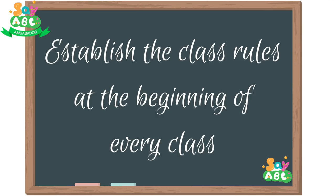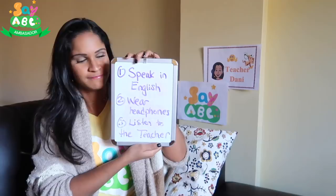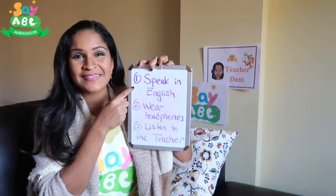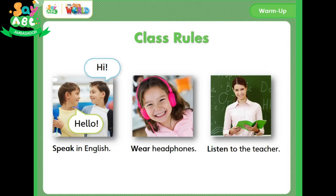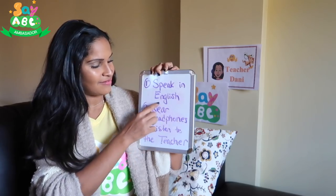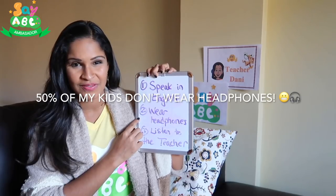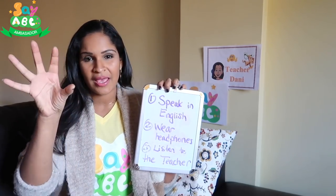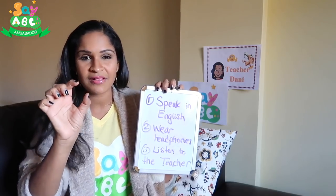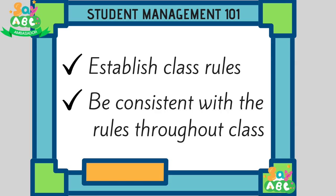At the beginning of every Say ABC class you have the class rules: rule number one, speak in English; rule number two, wear headphones; and rule number three, listen to the teacher. Many of the time they're not wearing their headphones, but it's okay because in the classroom you can mute them or specifically choose a student's microphone. Keep that in mind as your objective as a teacher.